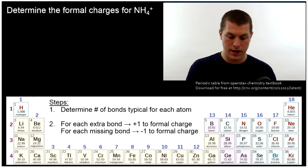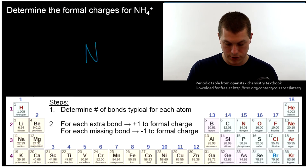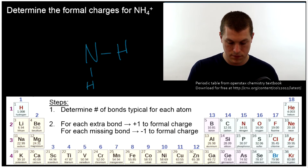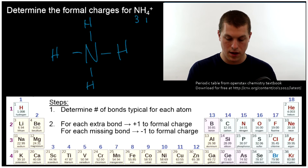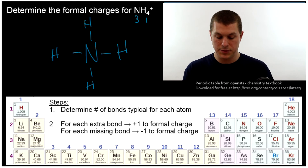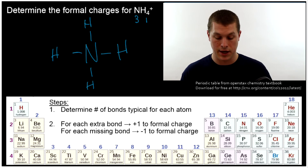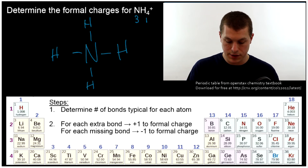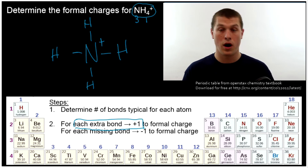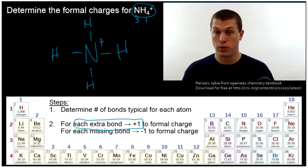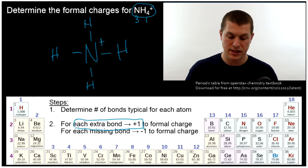Let's do another example. Here we have NH4+, and I'll quickly draw the Lewis structure. Nitrogen wants three bonds and hydrogen wants one. Each of my hydrogens has one bond, so the formal charge of all the hydrogens in this molecule is zero, which is the most stable formal charge you can have. On the other hand, nitrogen wants three bonds but has four, and since there is an extra bond, that gives us a plus-one formal charge. So our nitrogen has a plus-one formal charge, and that actually explains why our molecule overall is plus one. We've added a hydrogen onto our NH3 — protons are positive — and so we have a plus-one overall charge, and you can see that with the formal charges.